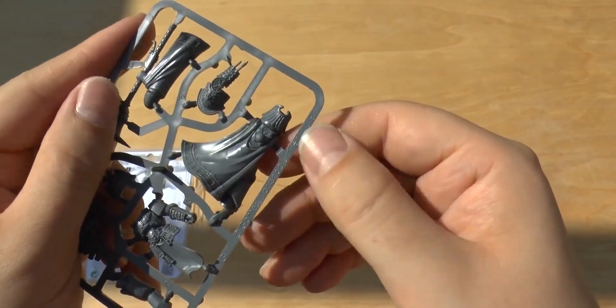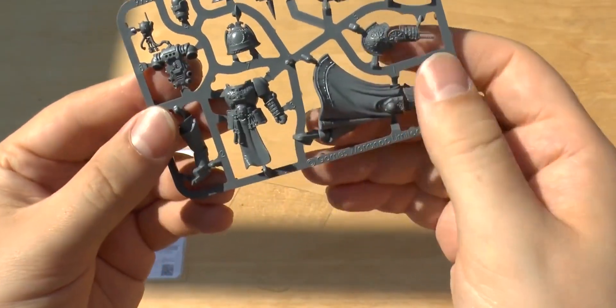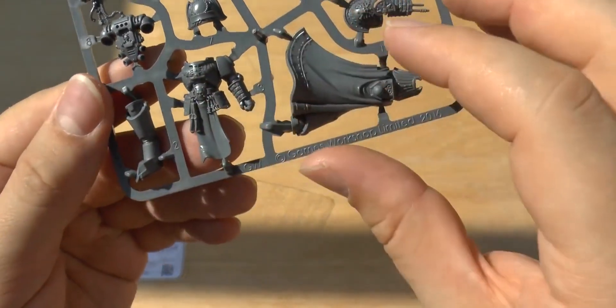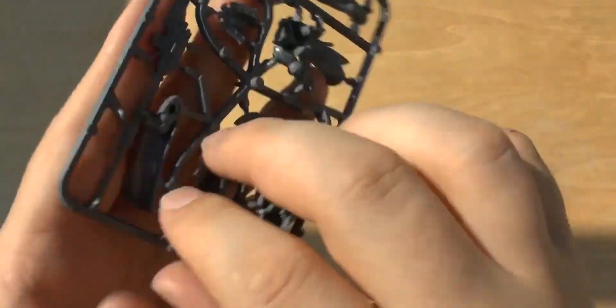It's worth noting that it says 2016 on this sprue, so they haven't had it that long this year. Lovely armour. Great detail. So much detail on these plastic kits now.